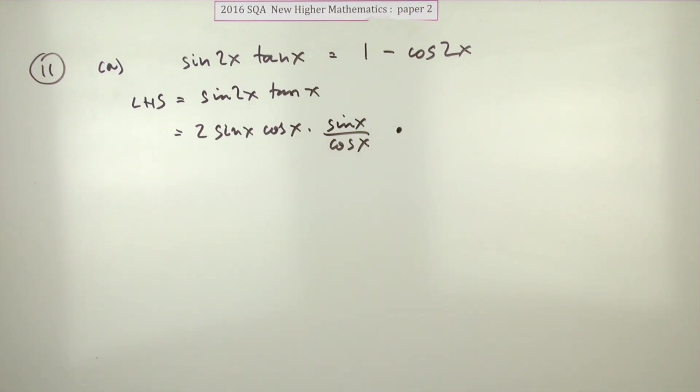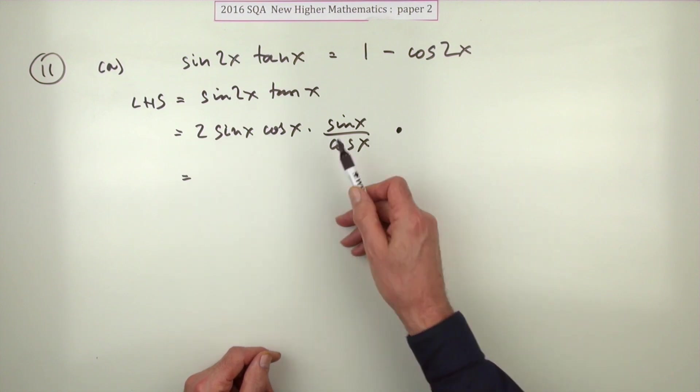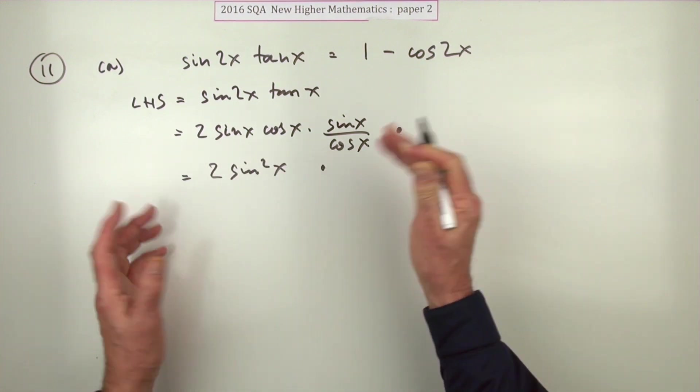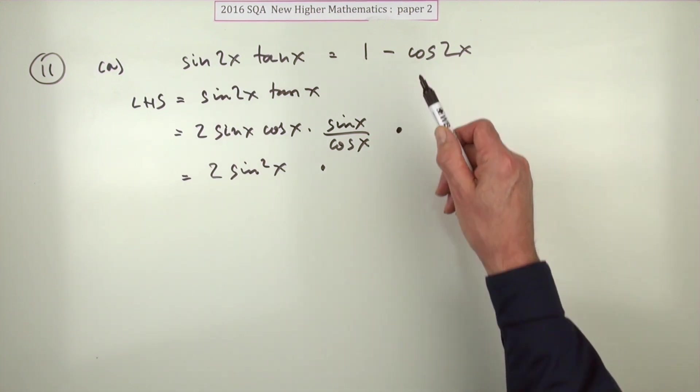Doing that gets you the first mark. Now, simplifying that is really obvious: the cosines cancel out and you're just left with 2sin²(x). For some reason, just writing that gets you the next mark.